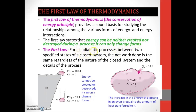For all adiabatic processes between two specified states of a closed system, the net work done is the same regardless of the nature of the closed system and the details of the process. Look at this example: this is state number one and this is state number two — when the rock is dropped from state one to state two.